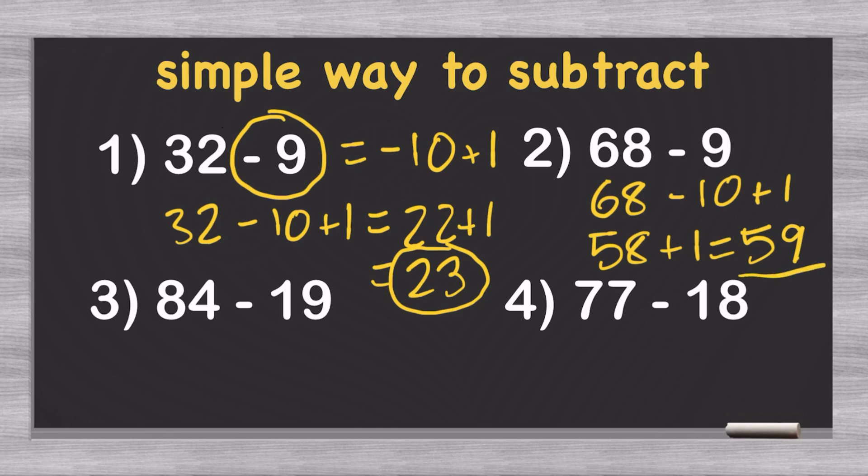And we can continue this not just for 9, for any number that's similar to a multiple of 10. So 9 is pretty close to 10. And we can see in our third example that instead of 9, we have 19, which is really close to 20. So what you're going to do for 84 minus 19 is think of it as 84 minus 20 plus 1. That is equal to 64 plus 1. And 64 plus 1 is equal to 65. And that is our answer.